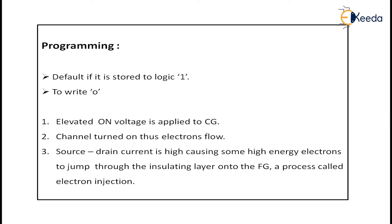Because of applying a large amount of voltage to my control gate, the channel will be turned on, and thus electrons start flowing. Because of the large current flow, some high energy electrons jump through the insulating layer onto the floating gate — a process called electron injection. For programming NOR-based flash memory, the technique called hot electron injection is used.